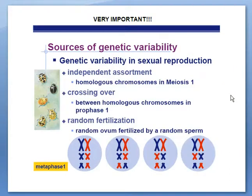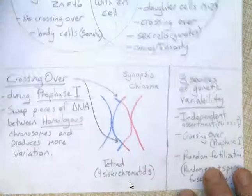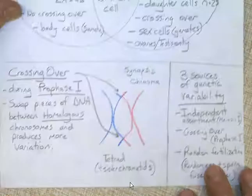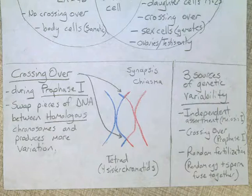At this time, we're going to get some notes on the three sources of genetic variability as well as crossing over. Go ahead and pause at this time and copy down your notes.